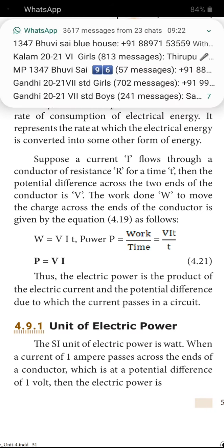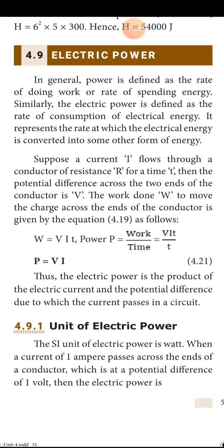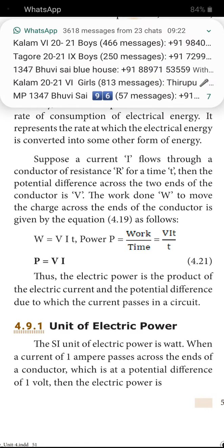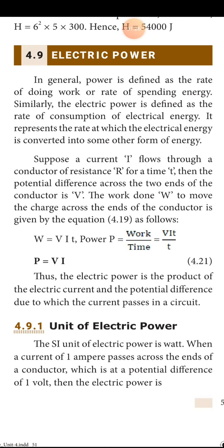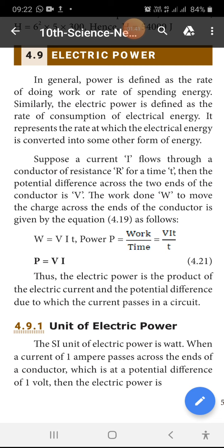Within a particular time, power is doing work at a particular time. Doing work depends upon the time. So power is defined as the rate of doing work. Electric power is defined as the rate of consumption of electrical energy.